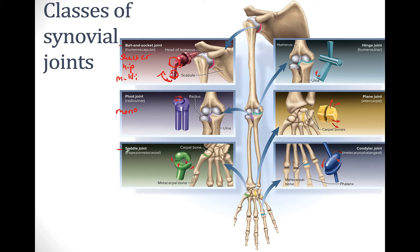Another type of joint is the saddle joint, and this is only found in one spot: the trapezio-metacarpal. It's called a saddle joint because each of these surfaces looks like a saddle, coming up like the front and back of a saddle. They join together and are able to rotate in two planes, making this a bi-axial joint.